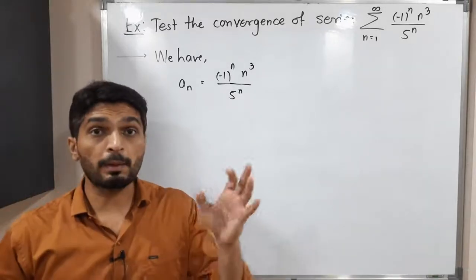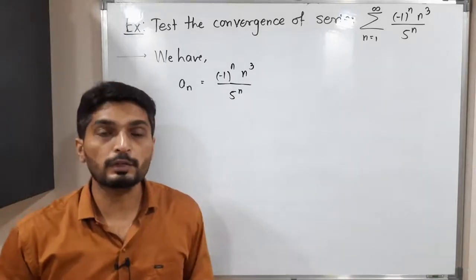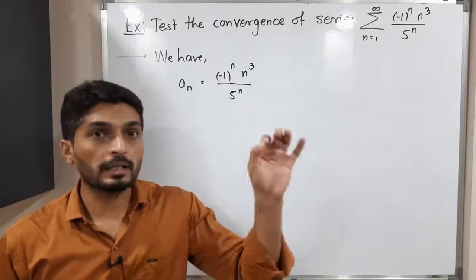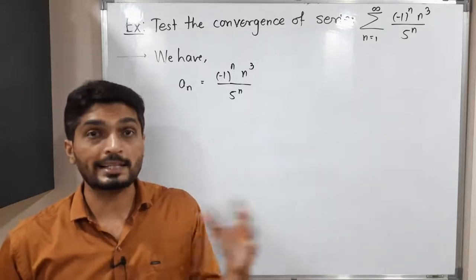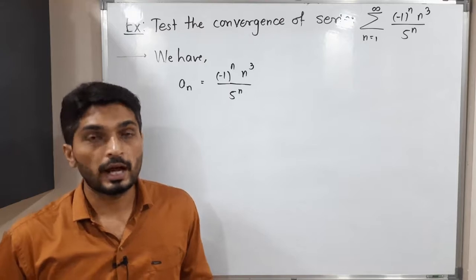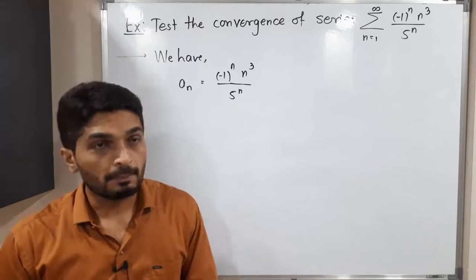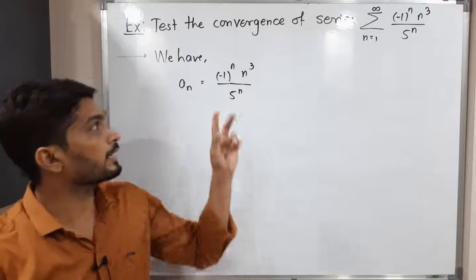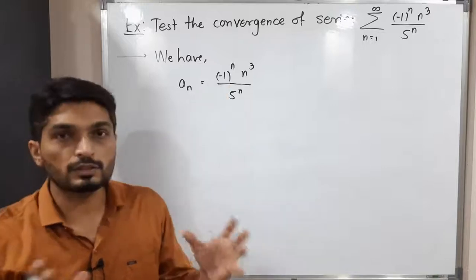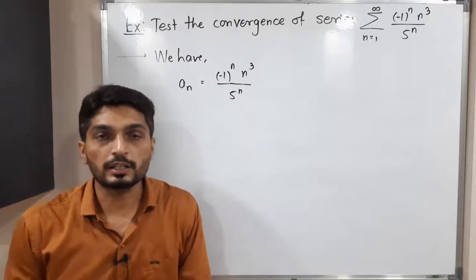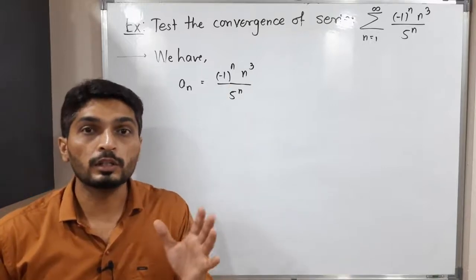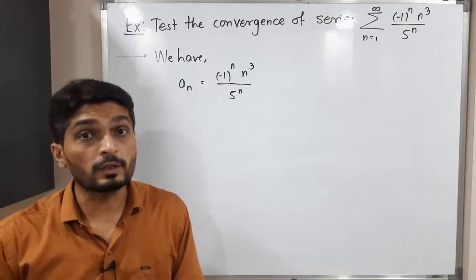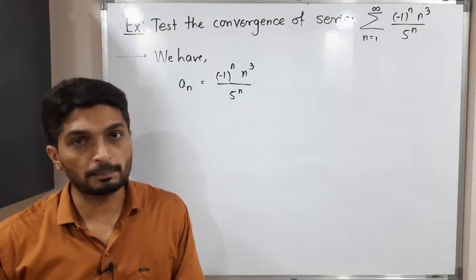Normally when we have a bracket raised to the nth power, we go for the nth root test, because the nth power and nth root cancel each other and we can easily find the limit. But here we have 5^n in the denominator and something different at the numerator, so I'm going to use the ratio test instead.